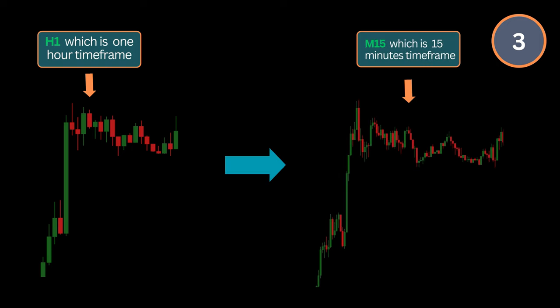Then number three, if you spot your pullback on one hour timeframe for example, then go to a lower timeframe i.e. 15 minutes. The reason for going down to a lower timeframe is so that you can see the smaller trend that is building up within the pullback.